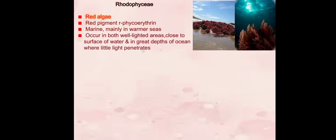Now we will discuss about the last part of algae, the Rhodophyceae or red algae. They are red because of the pigment phycoerythrin. They are mainly found in warm seas. They occur in both well-lighted areas close to surface of water and in great depths of ocean where little light penetrates.